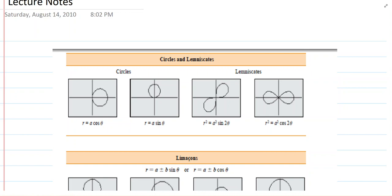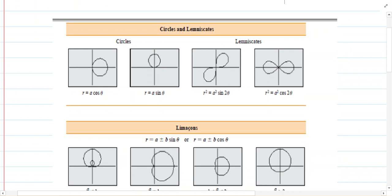The first group are the circles and lemniscates. If you have the form r equals a cosine theta, r equals a sine theta, you're going to get a circle, either above the x-axis or to the right of the y-axis. Those will be circles.